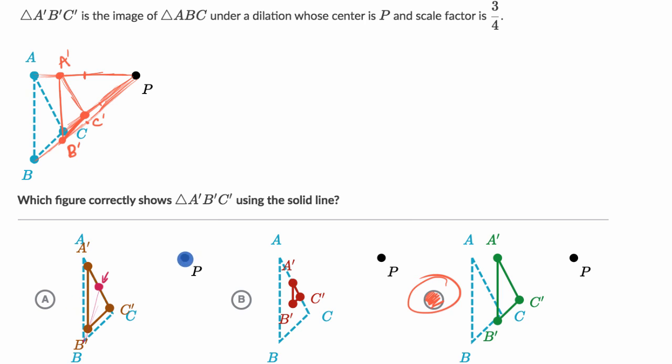So they have this other center of dilation in choice A. The center of dilation is not P, and that's why we can rule that one out. And then for choice B right over here, it looks like they just got the scale factor wrong. Actually, they got the center of dilation and the scale factor wrong.